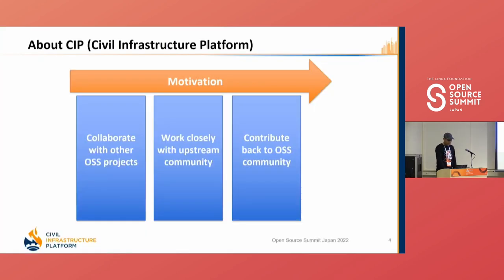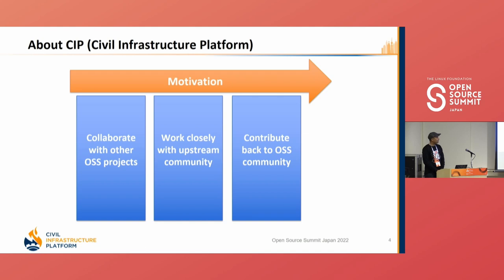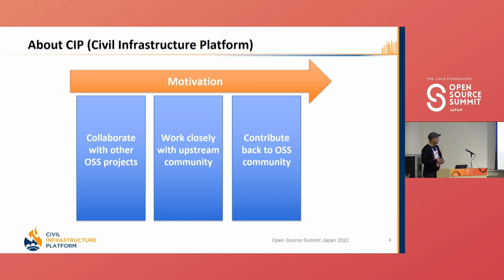Briefly about CIP: the main motivation is to collaborate with other open source projects and work with upstream projects to help each other and reuse effort contributed in different open source communities. As part of this, CIP contributes to multiple other open source projects, such as Reproducible Builds and many others, continuously collaborating with multiple open source communities.